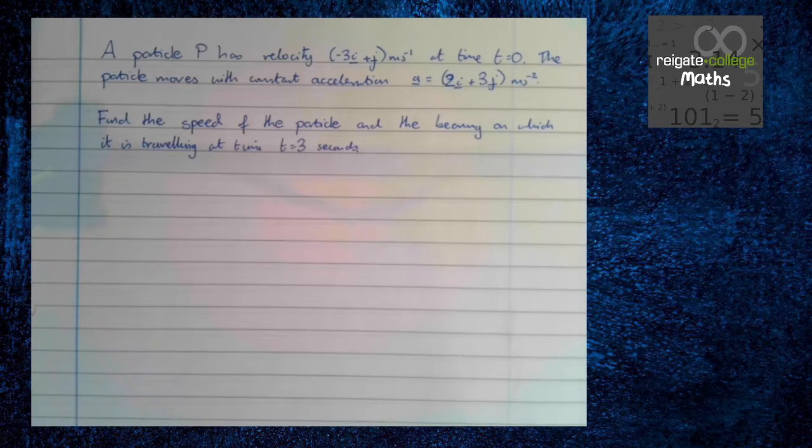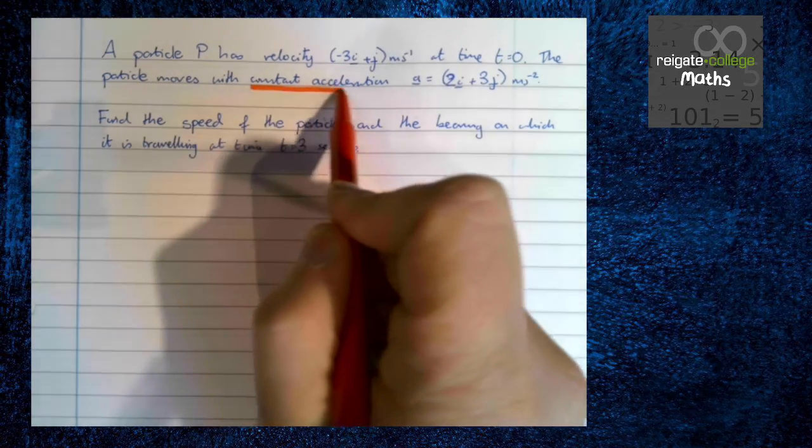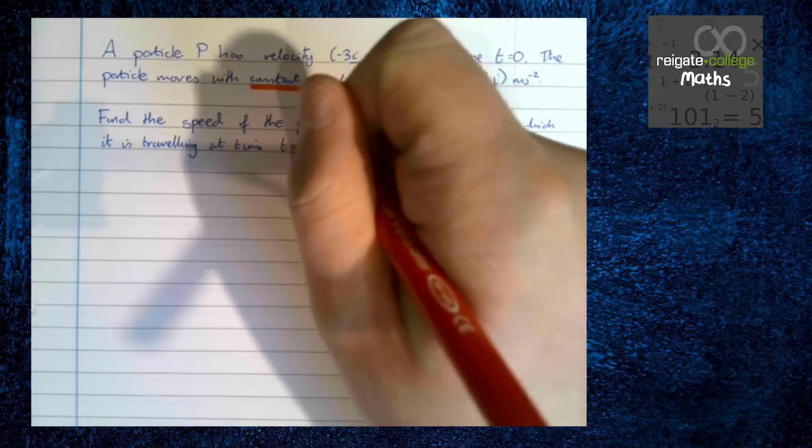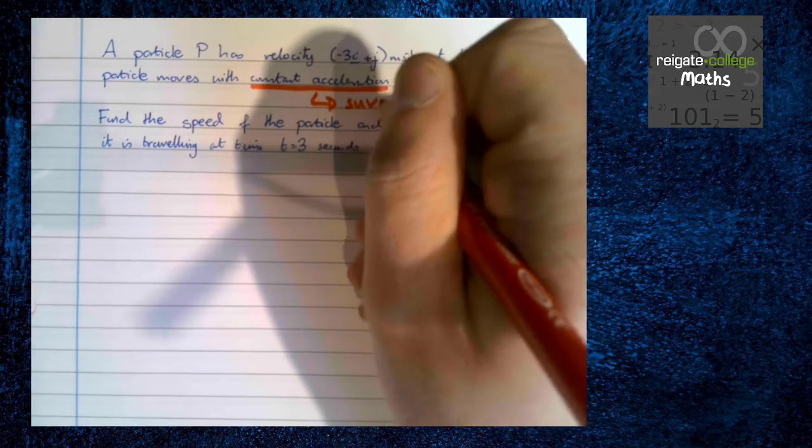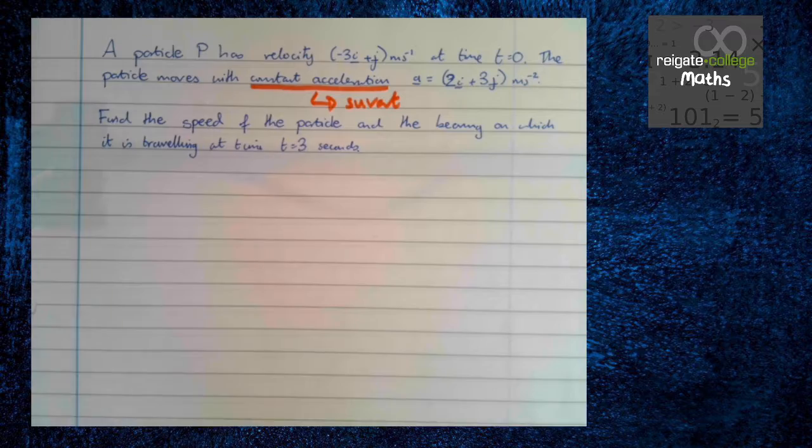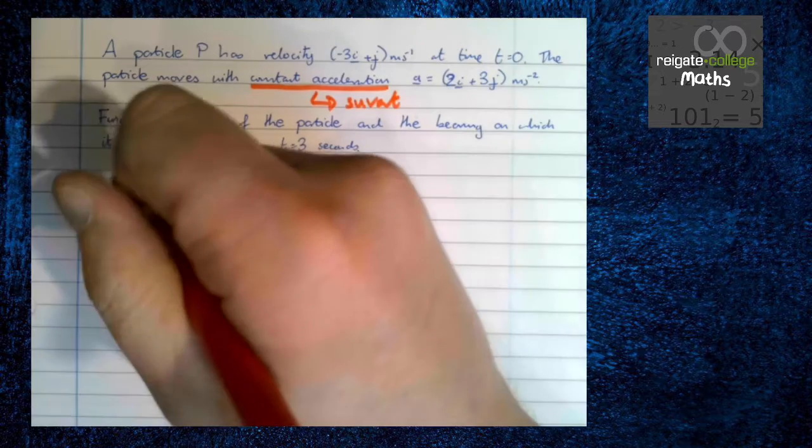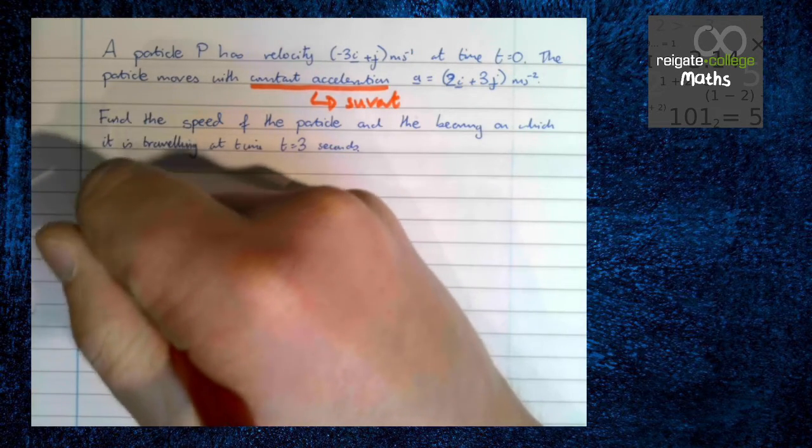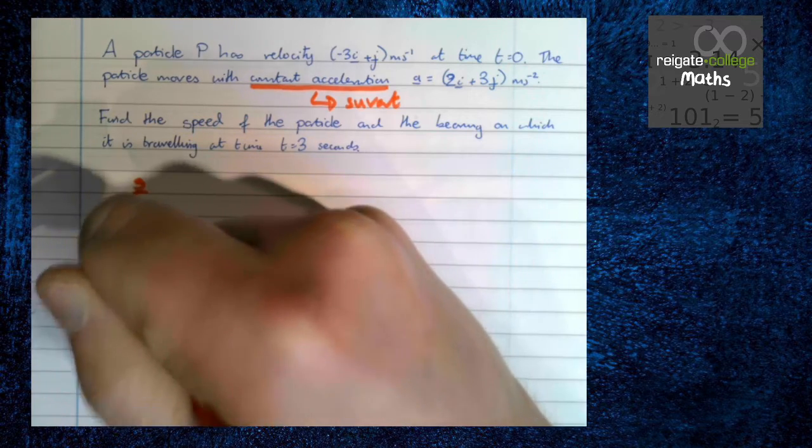But for now, for this video, we're just going to look at a couple of basic examples. So here's our first example. As is very typical with these mechanics questions, they're quite wordy. So what we need to do is unpick the words. Particle P has velocity minus 3i plus j at time t equals 0. The particle moves with constant acceleration. That's the key phrase. That tells us we're doing SUVAT.